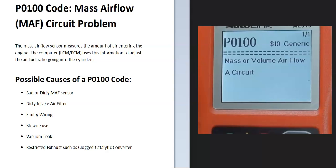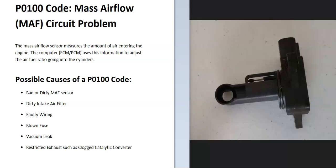Today I'm talking about a P0100 code — what it is and how you go about fixing it. A P0100 code is a mass airflow (MAF) circuit problem. The MAF sensor measures all the air that goes into the engine, and then the onboard computer uses this information to adjust the air-fuel ratio mixture that goes into each cylinder. The onboard computer has detected a problem with this.